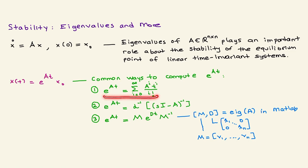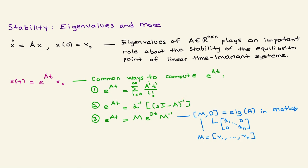One method uses the Euler series expansion: sum of A^i * t^i / i! from i equals zero to infinity. The second is finding (sI - A) inverse and applying the inverse Laplace transform, where s is the Laplace variable. The third method uses a modal transformation: e^(At) equals M * e^(Dt) * M⁻¹, where M is the modal matrix storing eigenvectors and D is the diagonal eigenvalue matrix.